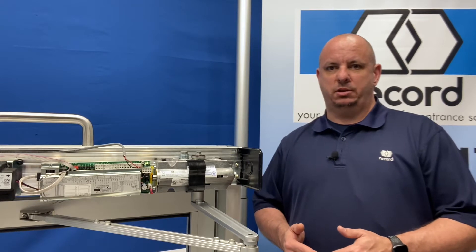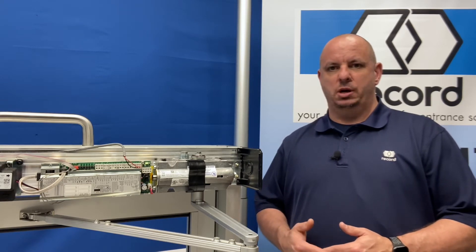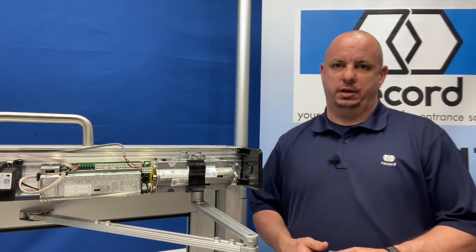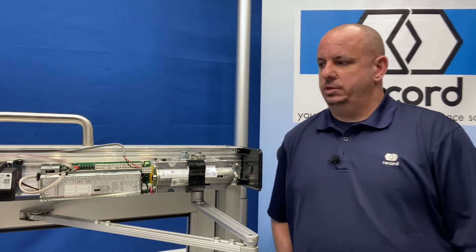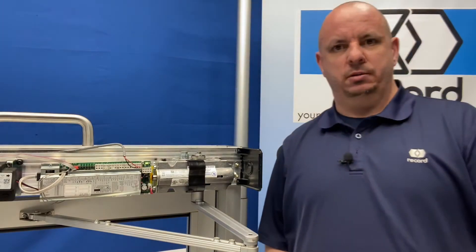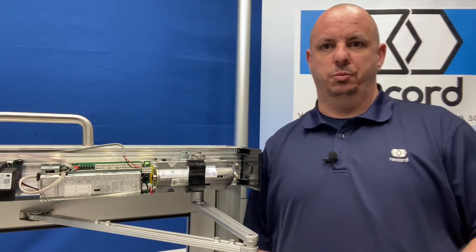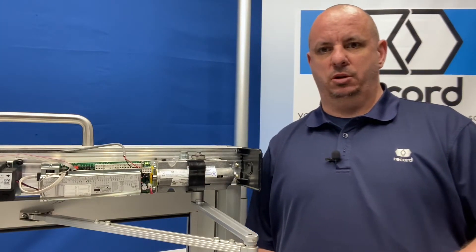What this learn cycle does is teaches the door that opening angle that it can see during an automatic operation or manual use. So when you get your door to that point, it's mechanically working, you can manually open and close it, you want to perform a learn cycle.